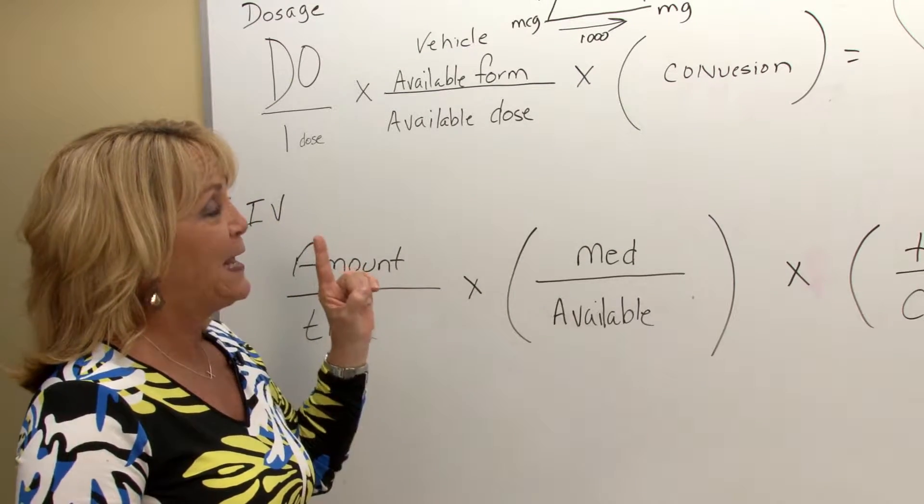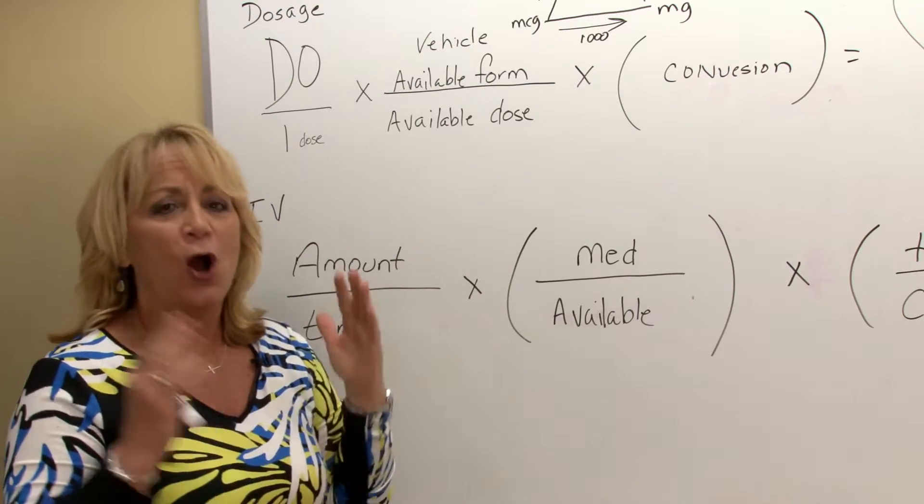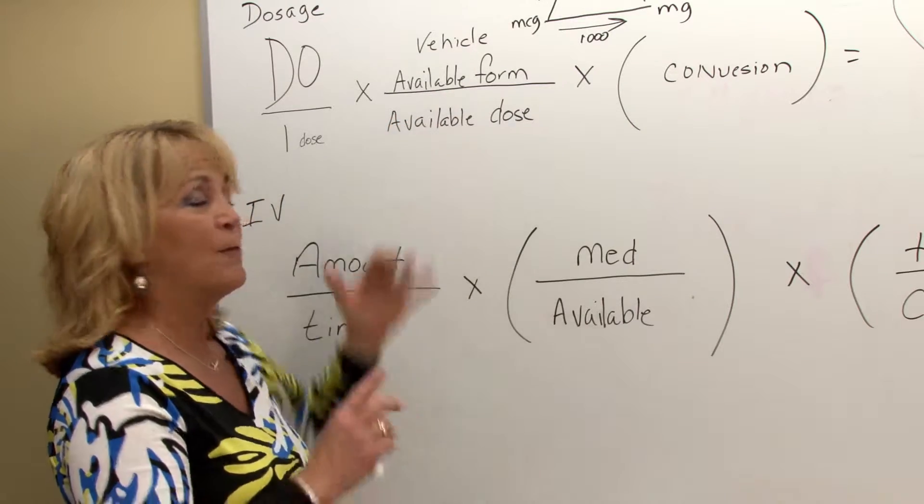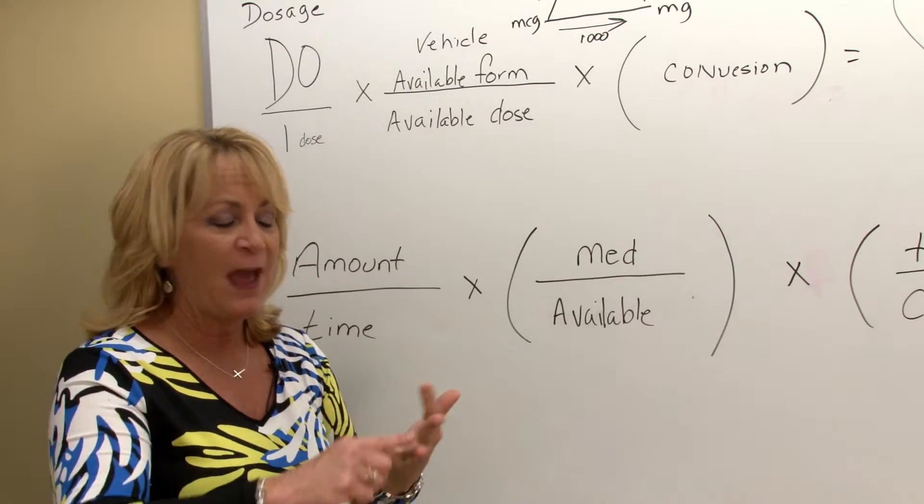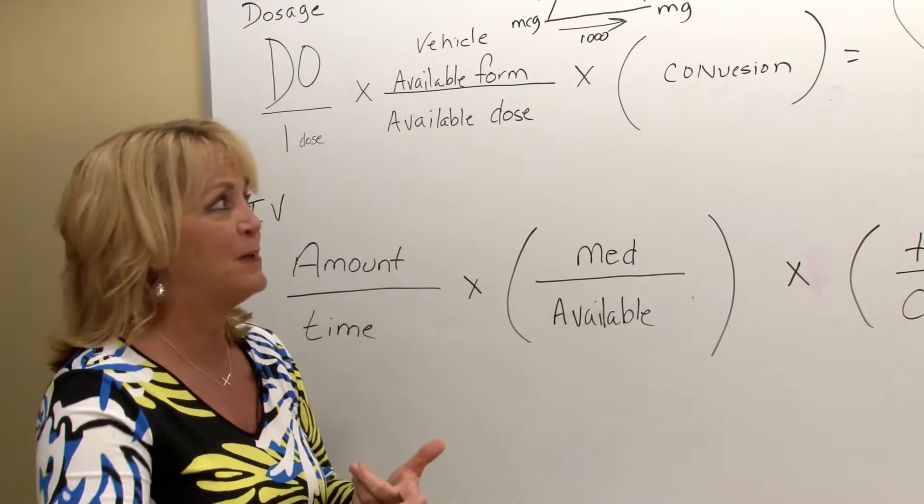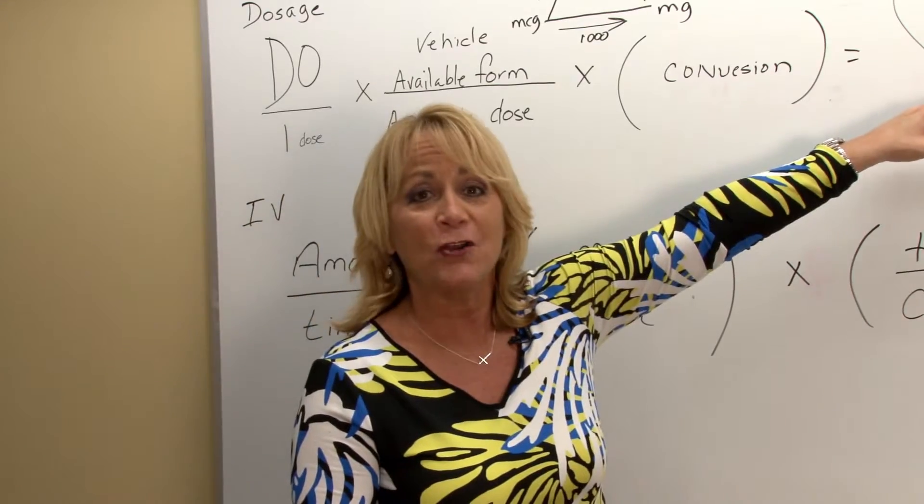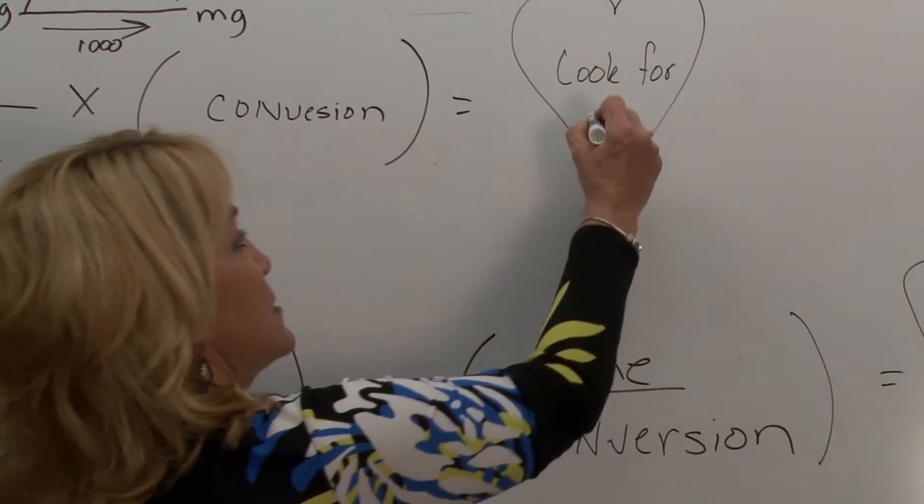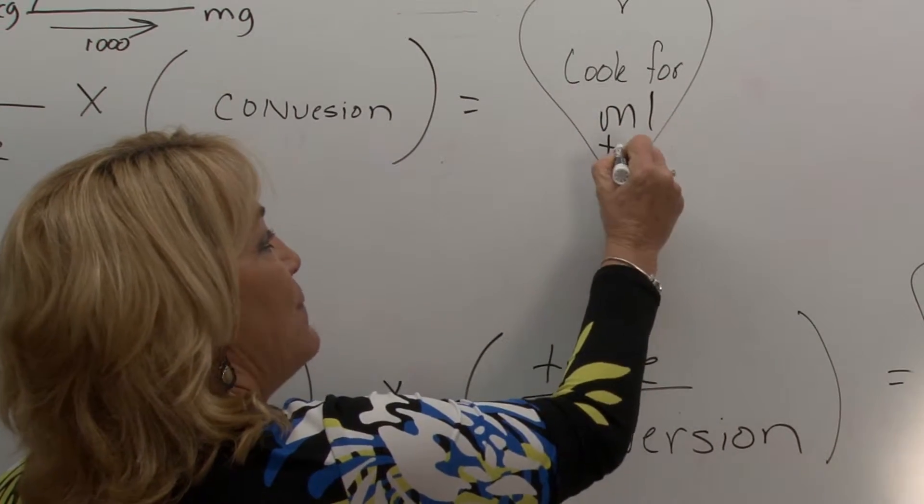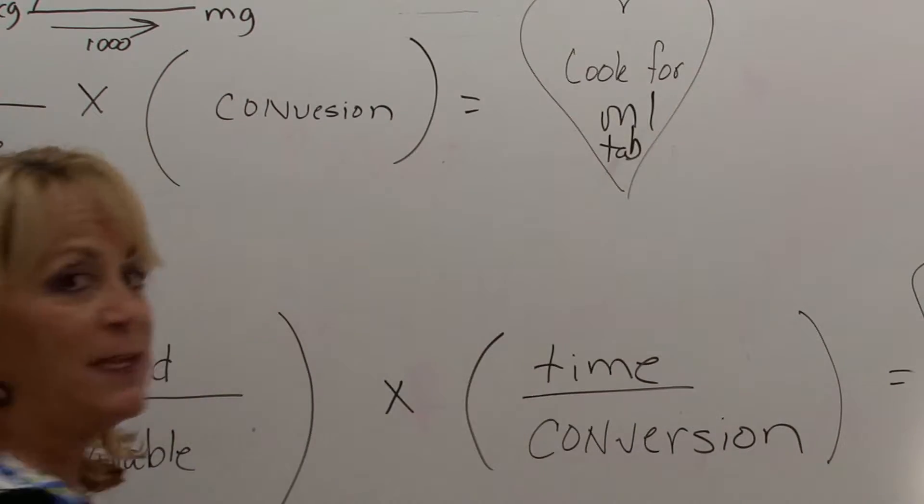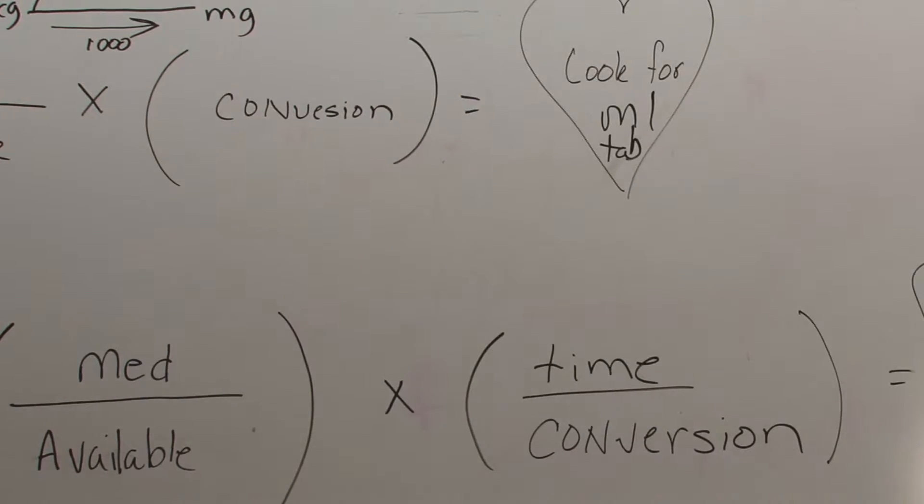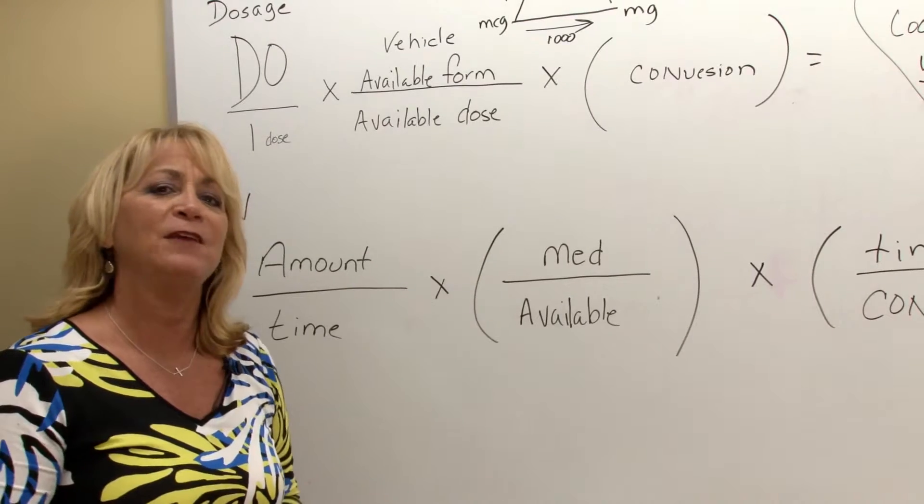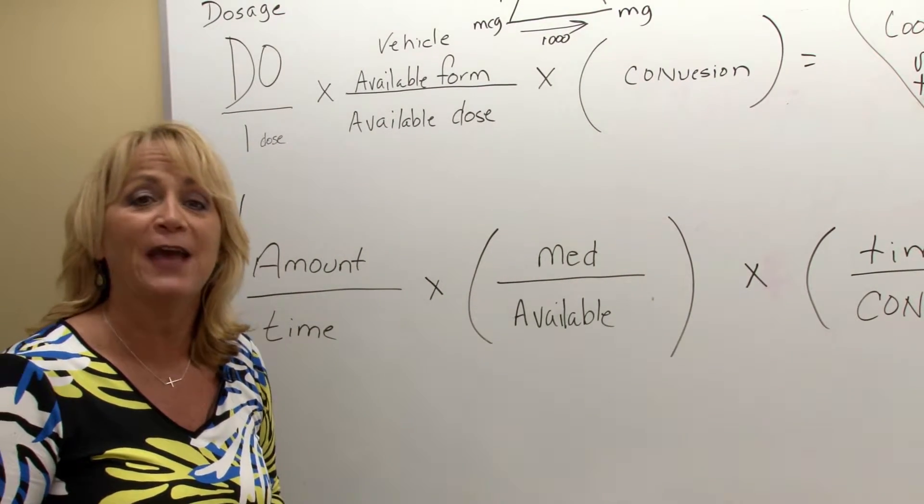So when you are finding out what the question is, always decide what is it I'm looking for. Am I looking for mils? What is my available form? Am I looking for how many mils I'm going to give? How many capsules? How many tabs? How many suppositories? How many units? And that is the heart of the question. So you want to circle it so that when you use dimensional analysis, once you're left with what you're looking for, you know you have it set up correctly and then all you have to do is use your calculator.